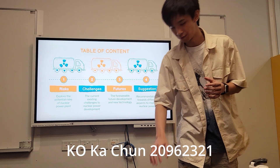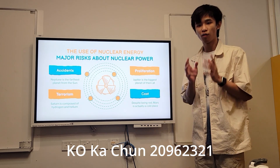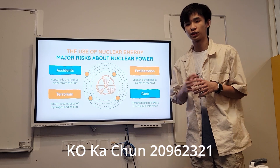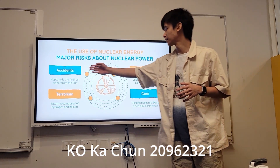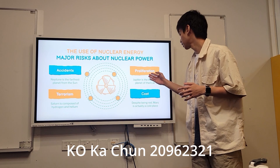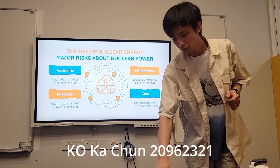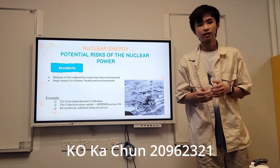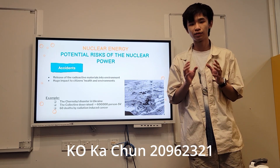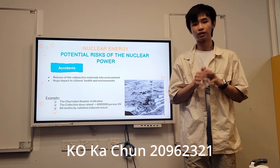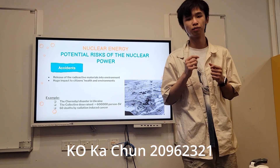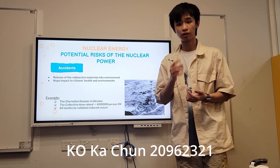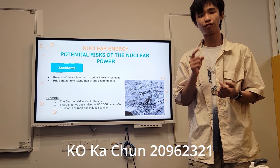Regarding the potential risks of using nuclear power, there are four major risks to consider: the risk of accidents, terrorism, proliferation, and cost. The most considerable risk is accidents. They can release radioactive materials into the environment, causing lasting damage to both the environment and human health. Even though accidents are rare, the impact can be severe.